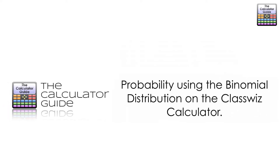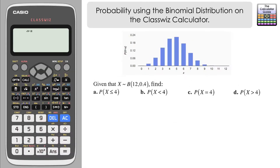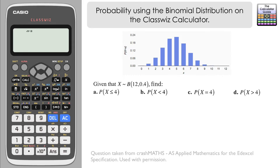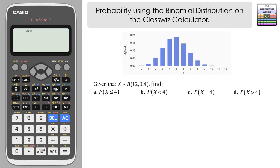Hello and welcome to the calculator guide video on probability using the binomial distribution on the ClassWiz calculator. We're going to use the binomial distribution feature on the ClassWiz to help us answer this question. Given that X is distributed binomially with an n value of 12 and a p-value of 0.4, we've got to find the probability of the following events A, B, C and D. I've also got displayed a diagram of the distribution just to help you see what's going on each time when we're working out the probabilities.